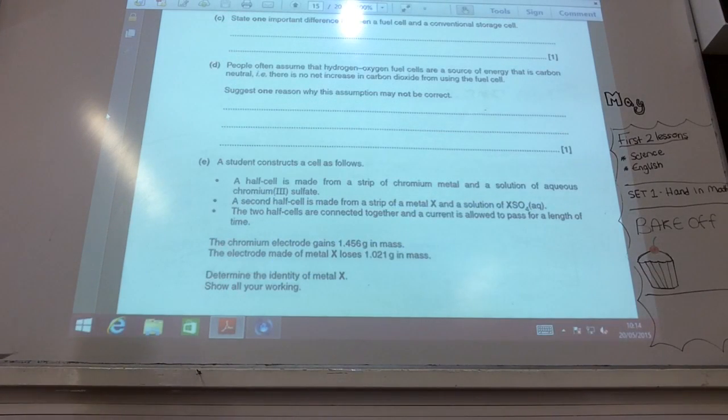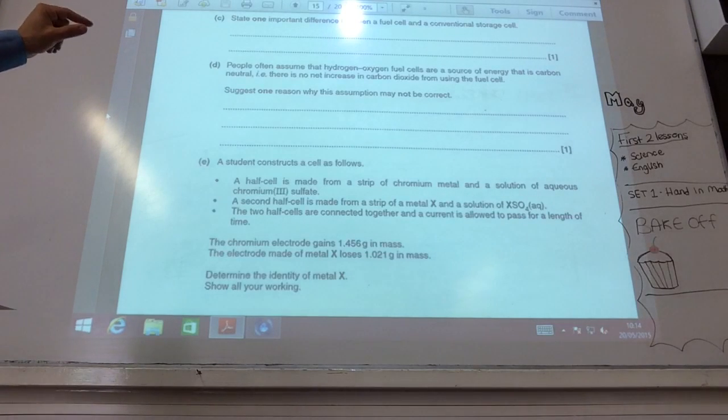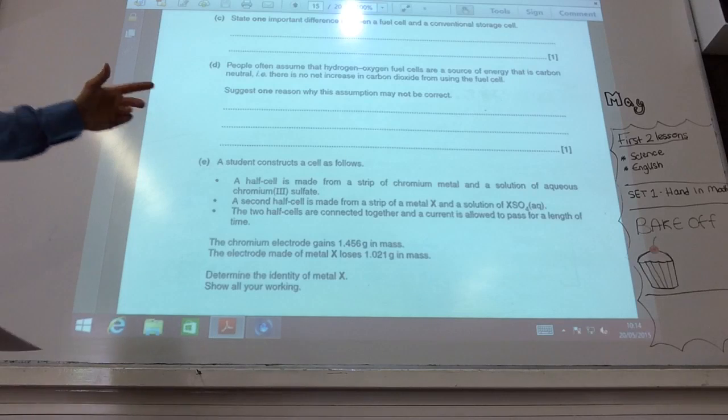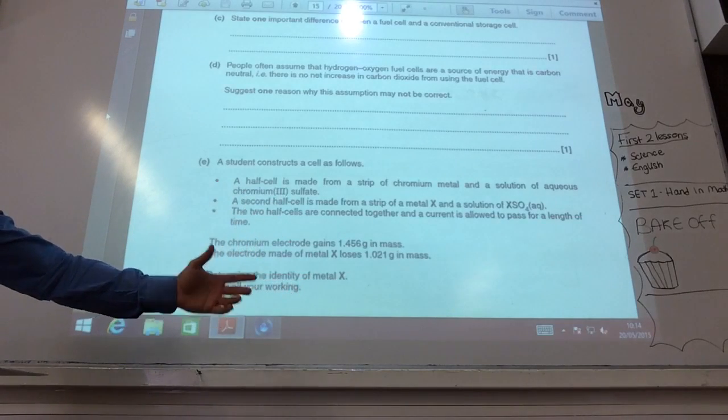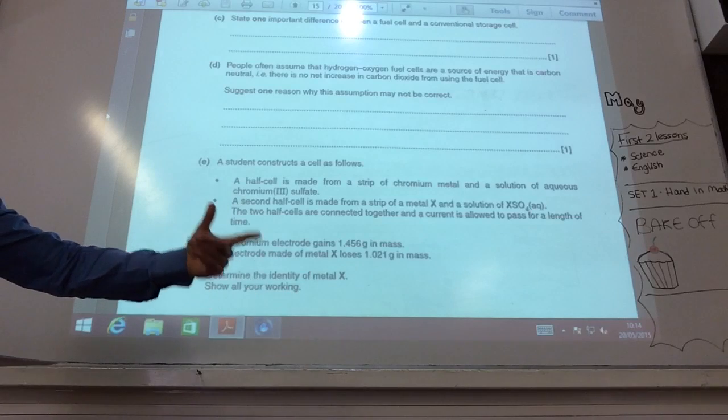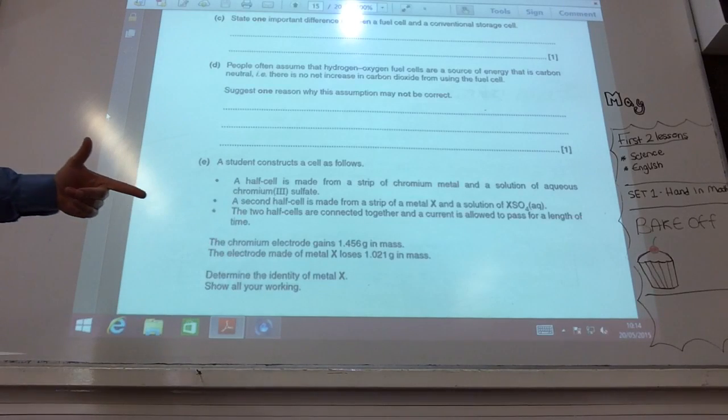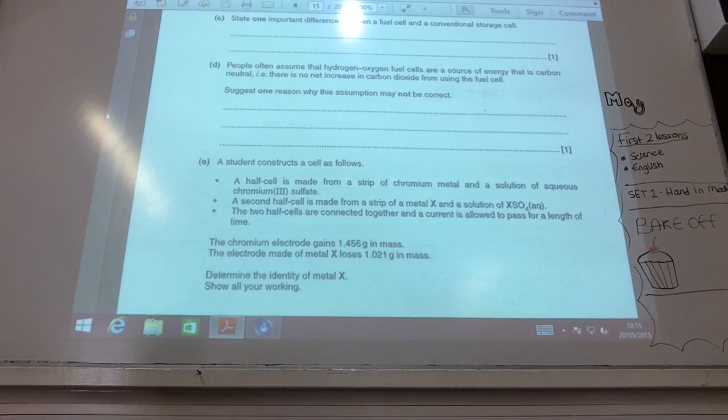A conventional storage cell, you have the reactants in and it uses them up. For a fuel cell, you have a constant supply of hydrogen and oxygen gas going in and therefore a constant supply of energy. People often assume they're carbon neutral. Why is that not the case? Well, probably we've had to get the hydrogen from somewhere. And we've probably used, maybe we could have burnt fossil fuels to produce the hydrogen. That's why it's not carbon neutral.